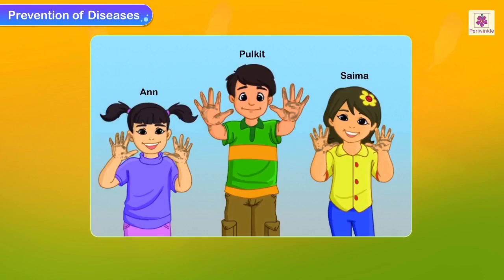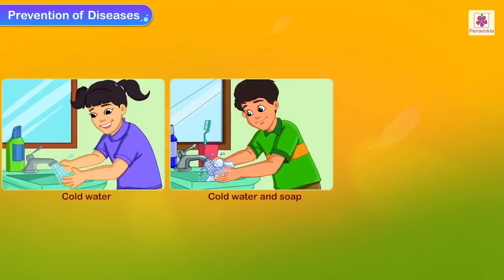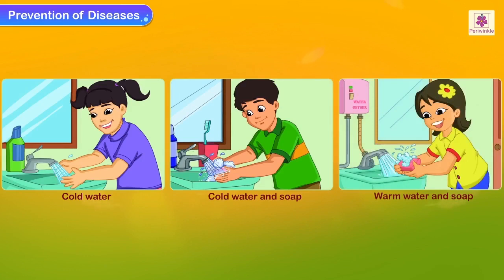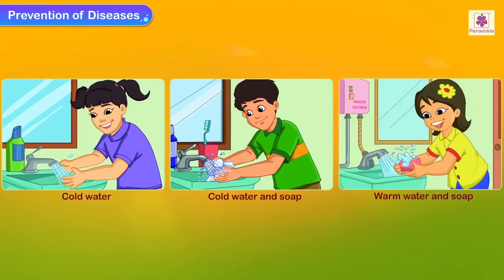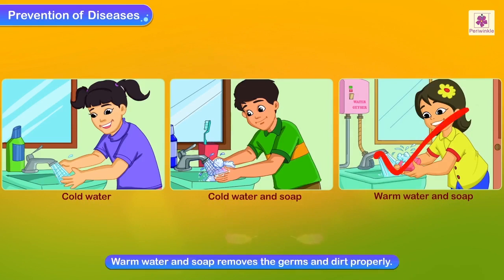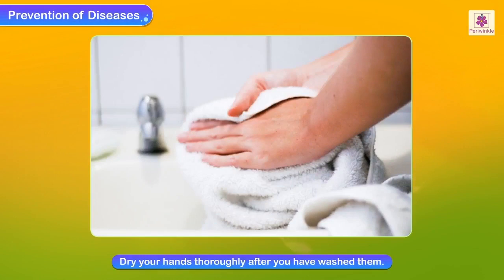Pulkit and Saima have dirty hands; each of them washed their hands for 15 seconds. Pulkit uses cold water and soap, while Saima uses warm water and soap. Who will have the cleanest hands, and why? Saima will have the cleanest hands, as warm water and soap will remove germs and dirt more effectively. Remember to dry your hands thoroughly after washing them.